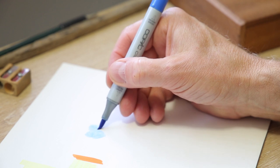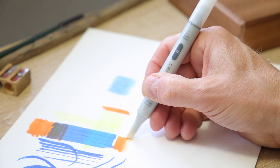There's also a blender pen available which simply contains the alcohol solvent useful for softening edges for example.